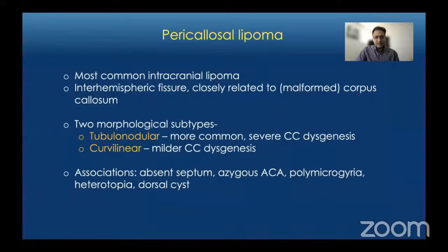Pericallosal lipoma is the most common location for an intracranial lipoma. It occurs in the inter-hemispheric fissure and is closely related to the corpus callosum, which is often malformed. There are two morphological subtypes: tubulonodular, which is more common and often associated with severe corpus callosal dysgenesis, and curvilinear, where there is a thin band of fat along the corpus callosum that may be normal or only mildly affected. Other associations include absence of septum pellucidum, polymicrogyria, heterotopias, and dorsal cysts.